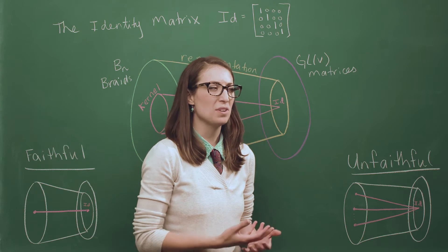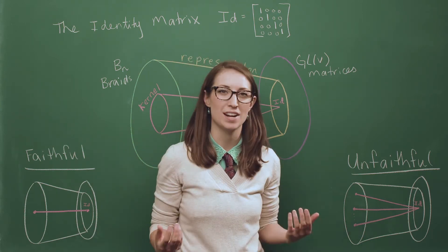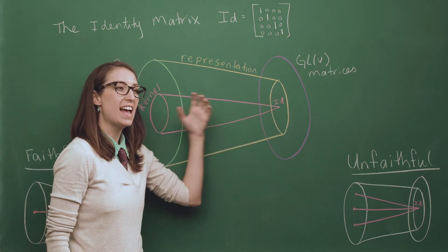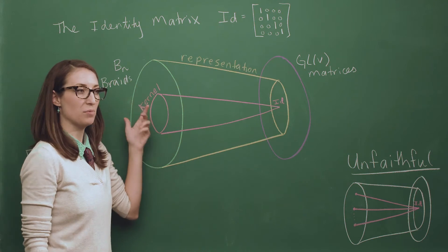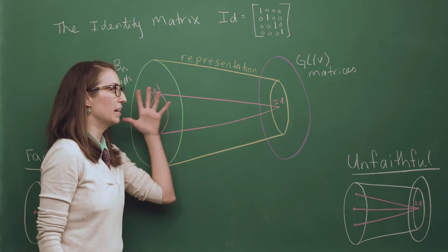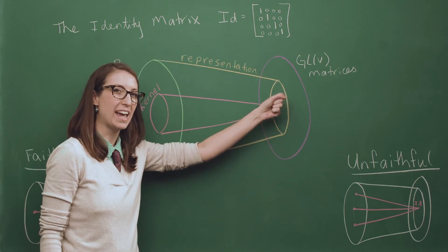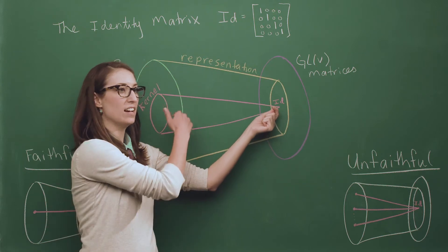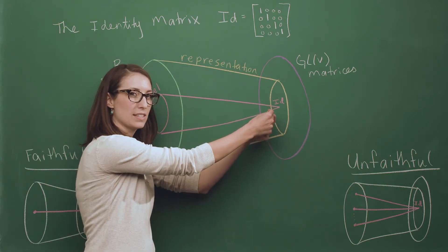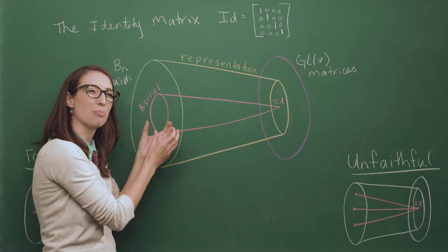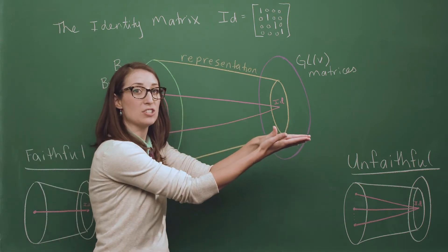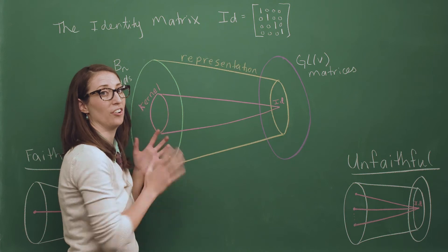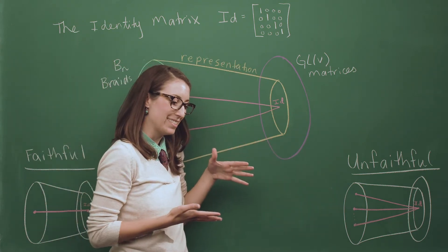So the question now is, what does the kernel have to do with measuring how good the representation was or how good the translation was? So here's how it works. You can think of any information that got sent to the identity as information that got lost. Because over here I had different braids. They had character, they had all sorts of tangles and crossing information, but I sent them to the bland matrix. The boring matrix that didn't have any information encoded in it. So all of these braids got lost. When I'm over here in the land of the matrices, I can't tell these braids apart anymore because they all got sent to the same matrix. So looking at how big the kernel is and how many braids are in the kernel is measuring a collapse, a loss of information. And it turns out you only need to look at these collections, this kernel, to tell how much information was lost. So it's like this collapsing idea.